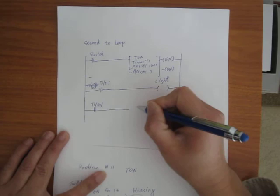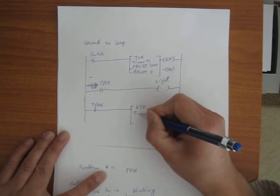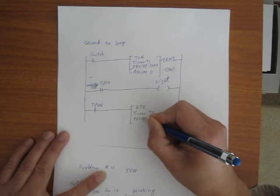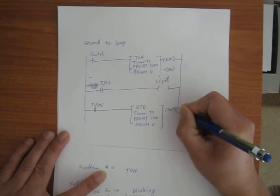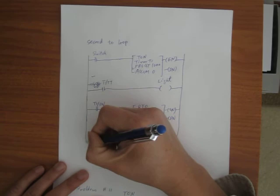When T1 DN is true, I'm going to turn on an RTO — a retentive timer that we talked about last lecture — Timer T2, with a preset of 1000, ACUME at 0, and EN and DN.